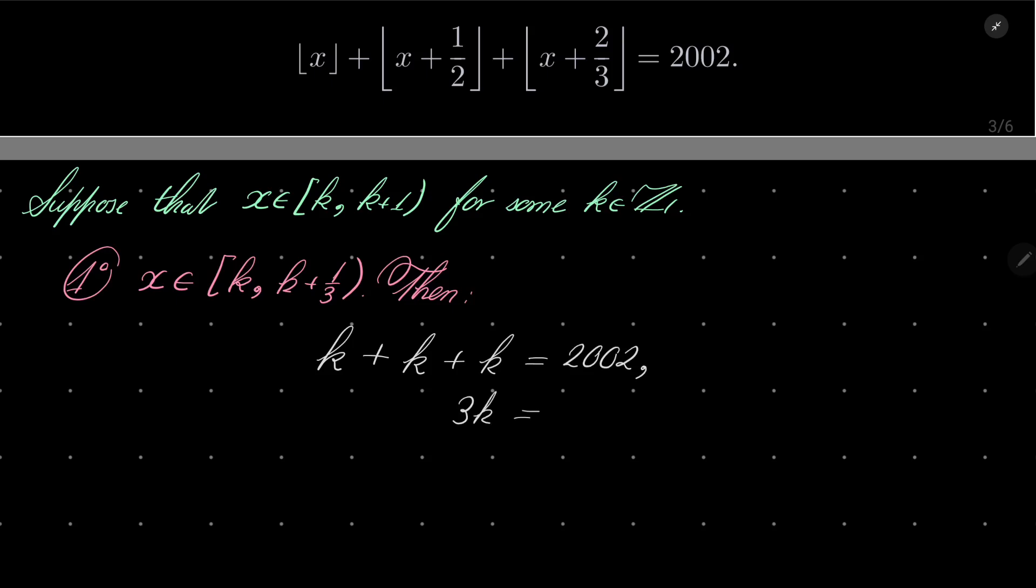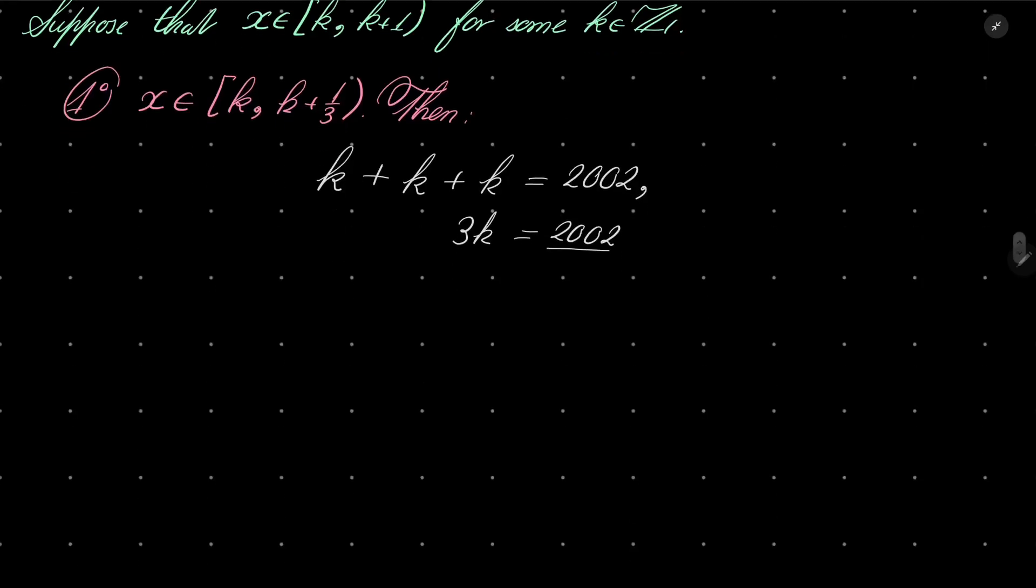So 3k equals 2002, and this is impossible because 2002 is not divisible by 3. So no solutions. No k satisfies this. No solutions there.